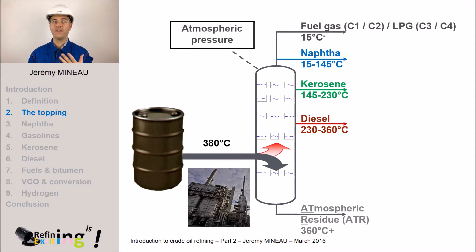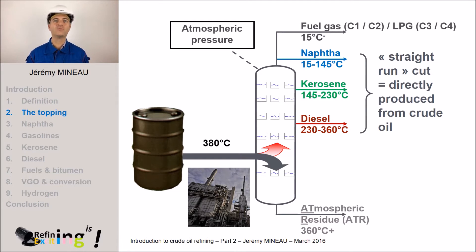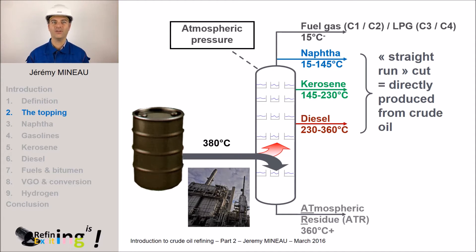These three cuts are called straight run, meaning that they are actually produced directly from crude oil itself. We make this distinction because we will see later on that there are a naphtha, a kerosene, and a diesel fuel which are not straight run.